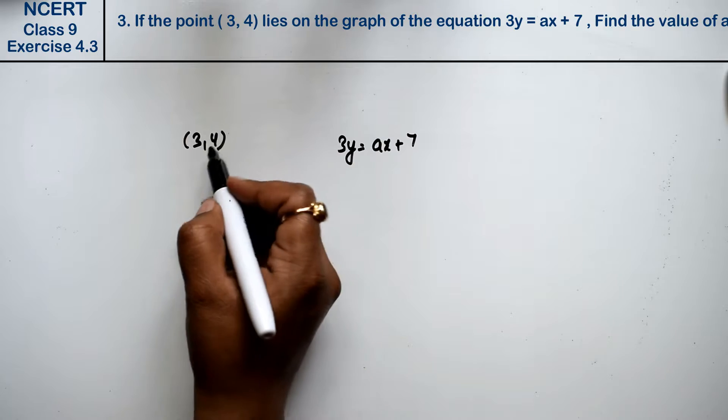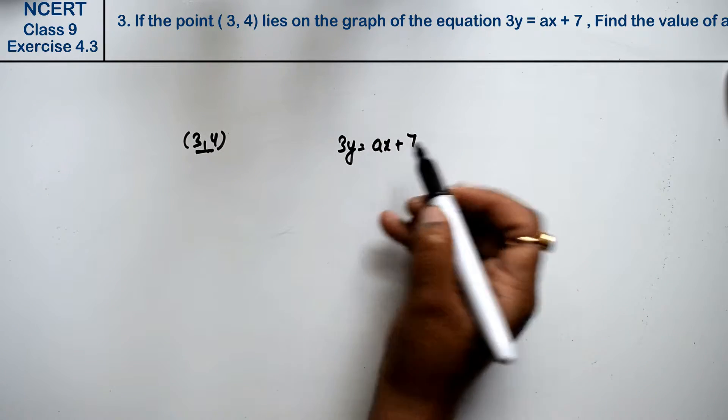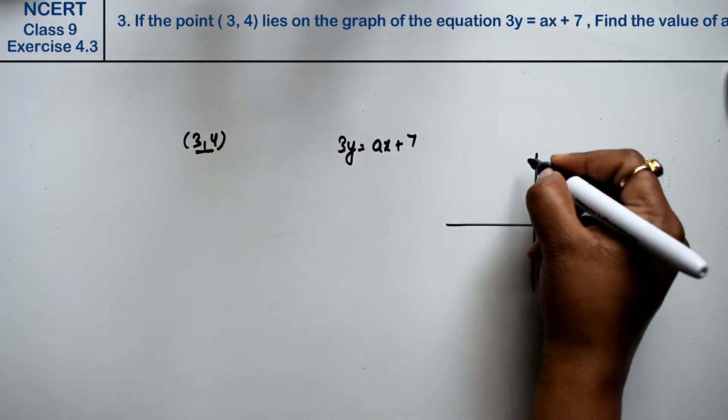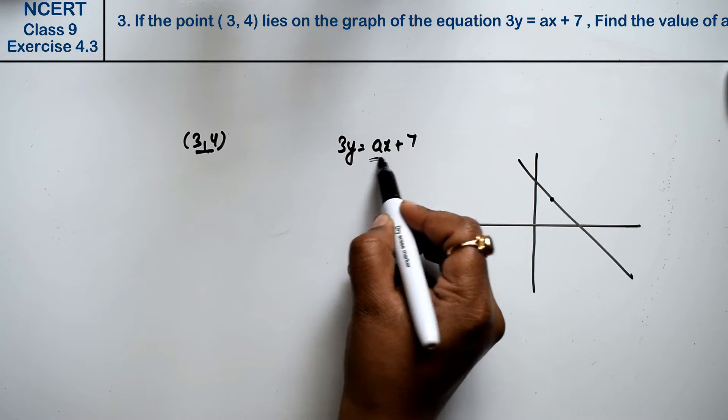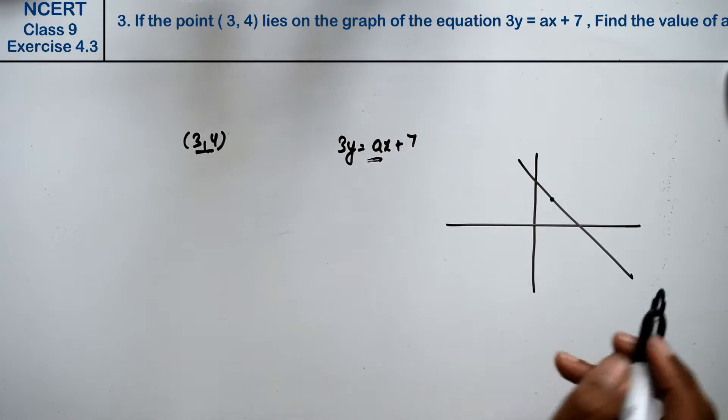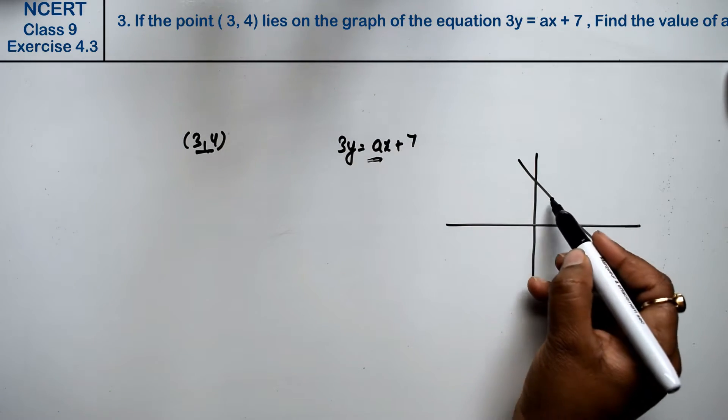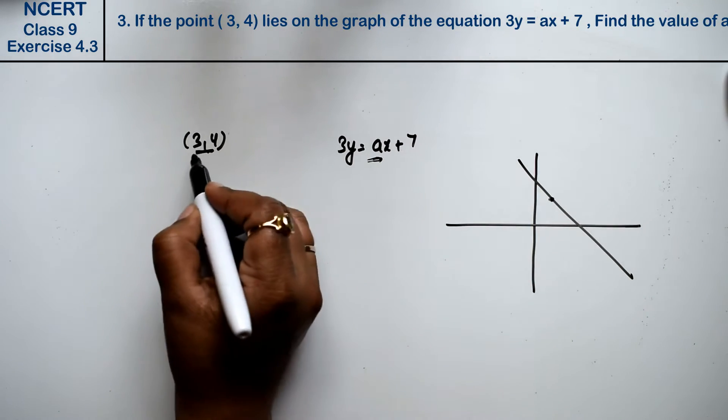Friends, he is saying that if this point is on the graph of this equation, like this. We have made a graph here. So what is the value of a? That means this is the coordinate. So what do we do?